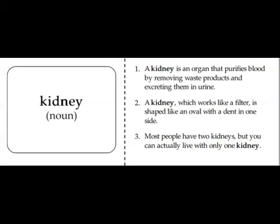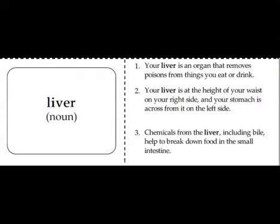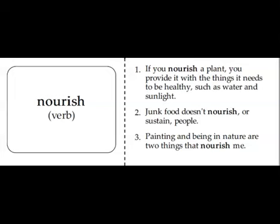The next three words are ones you should add to your vocabulary books. The first is 'kidney' — a kidney is a pair of abdominal organs that help to clean the body's blood. The next word is 'liver' — the liver is a large body organ that secretes juices to aid in digestion. The last word is 'nourish' — nourish means to provide with food or other substances necessary for growth.